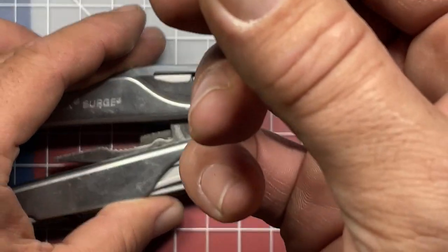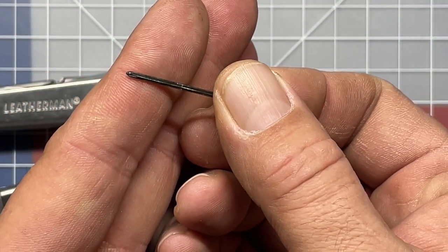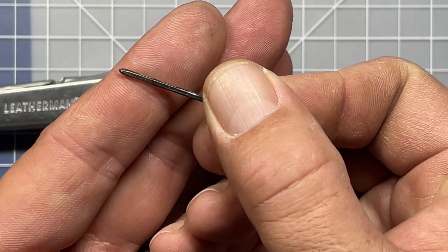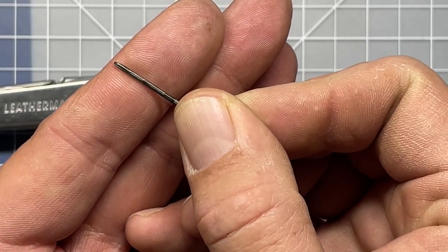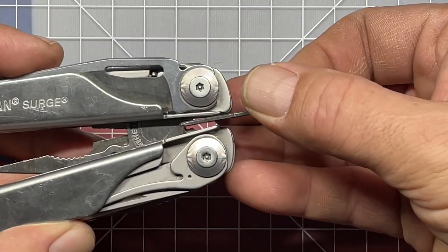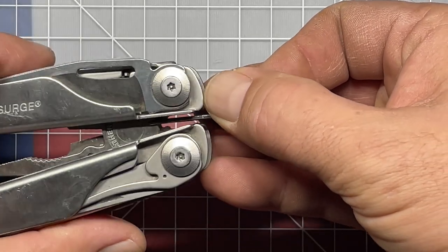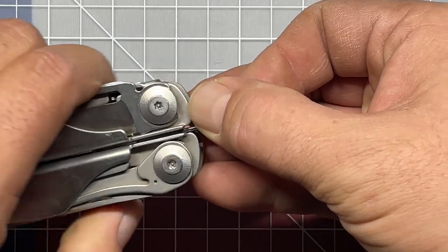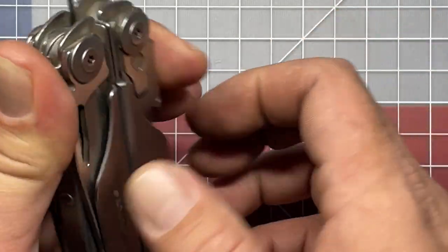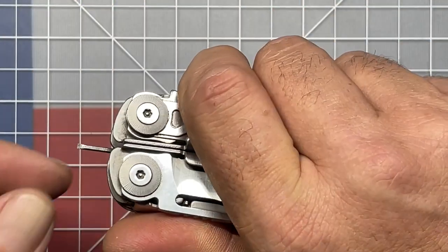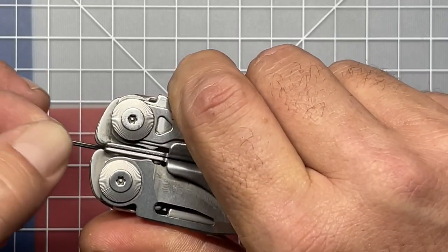Now you're going to have to set in the micro driver. It has a broader side and then it has the narrow side. You want to make sure that the broad side seats down against the top of the pliers here, and then you're able to close it up and you can actually put a little pressure on it. And it's actually pretty stable.